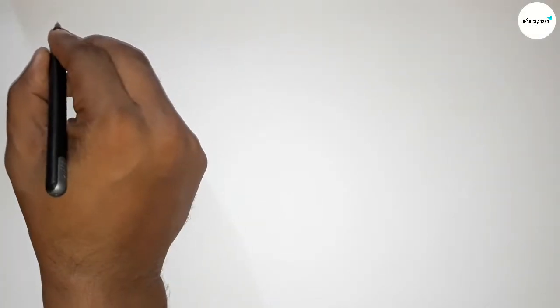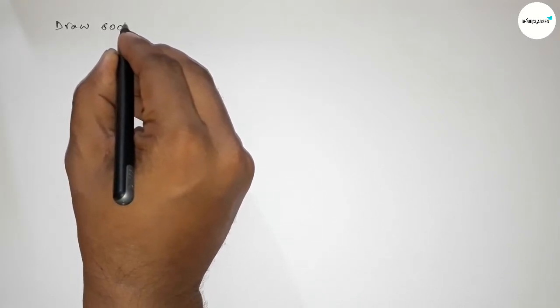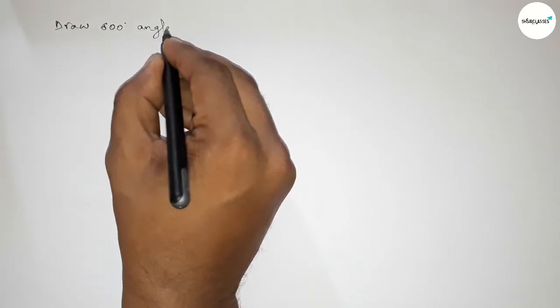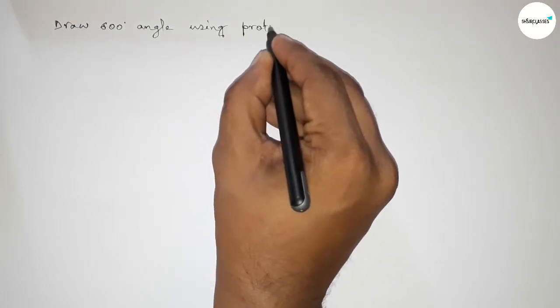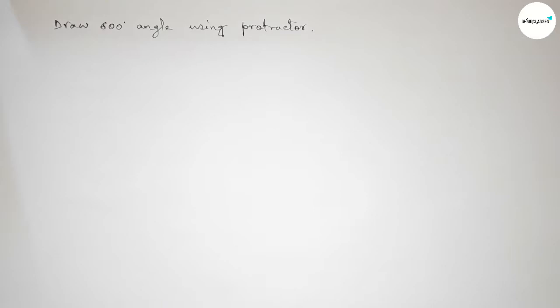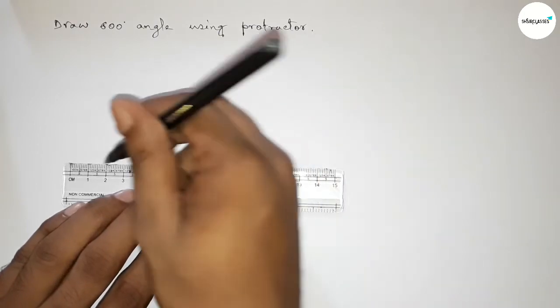Hi everyone, welcome to SI Share Classes. Today in this video, we will draw a 600-degree angle using a protractor in an easy way. Let's start. First of all, we need to draw a line of any length.